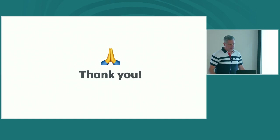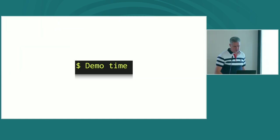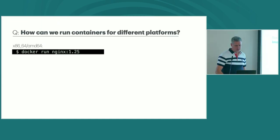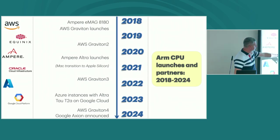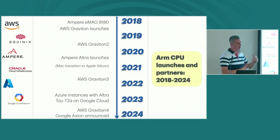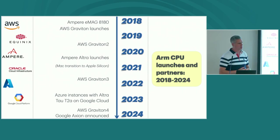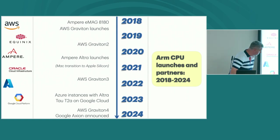AWS has a processor family called Graviton, which is an ARM64 implementation that has four generations now.